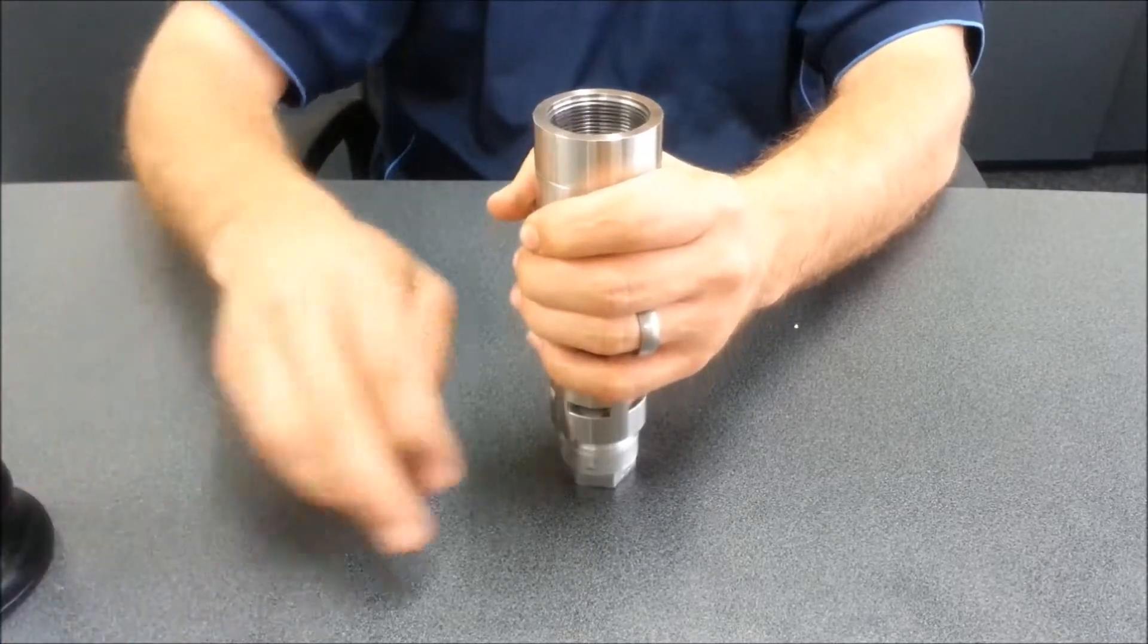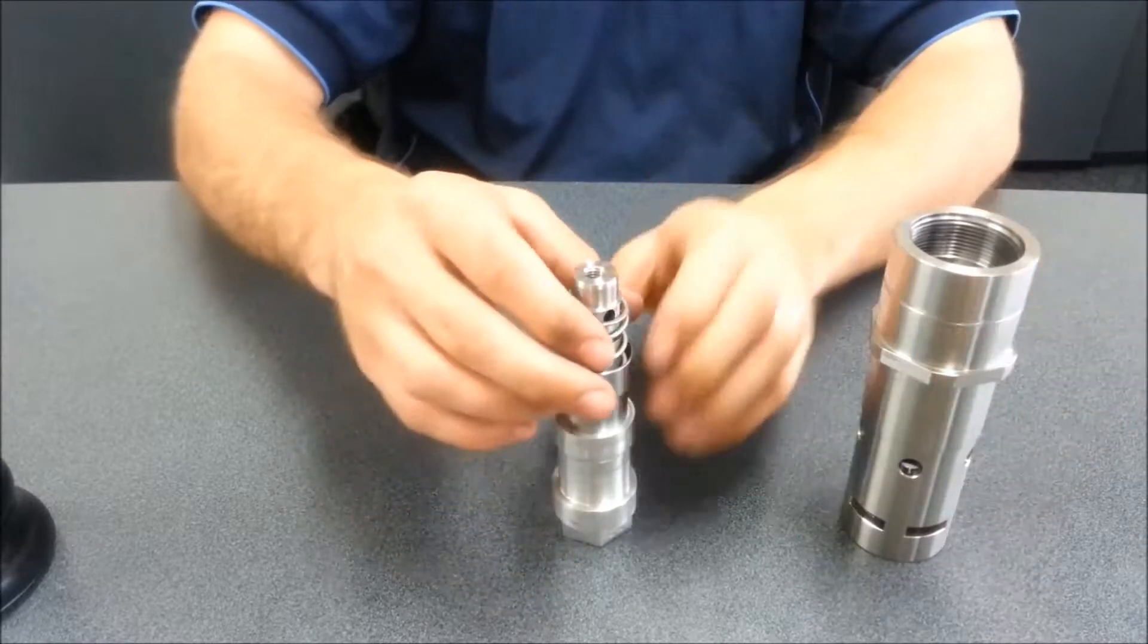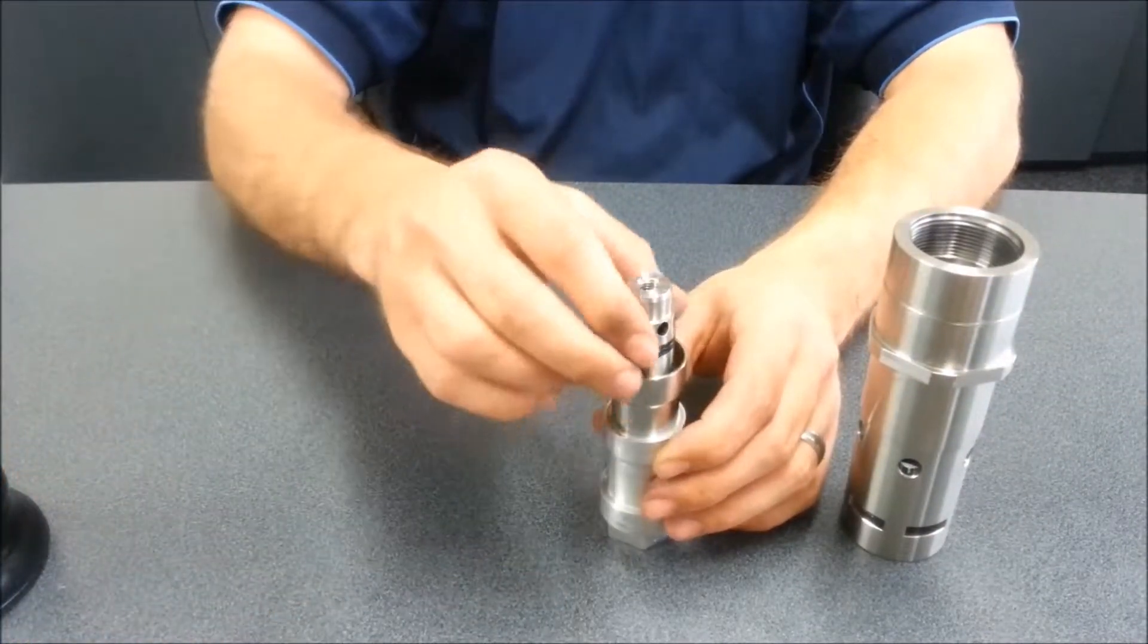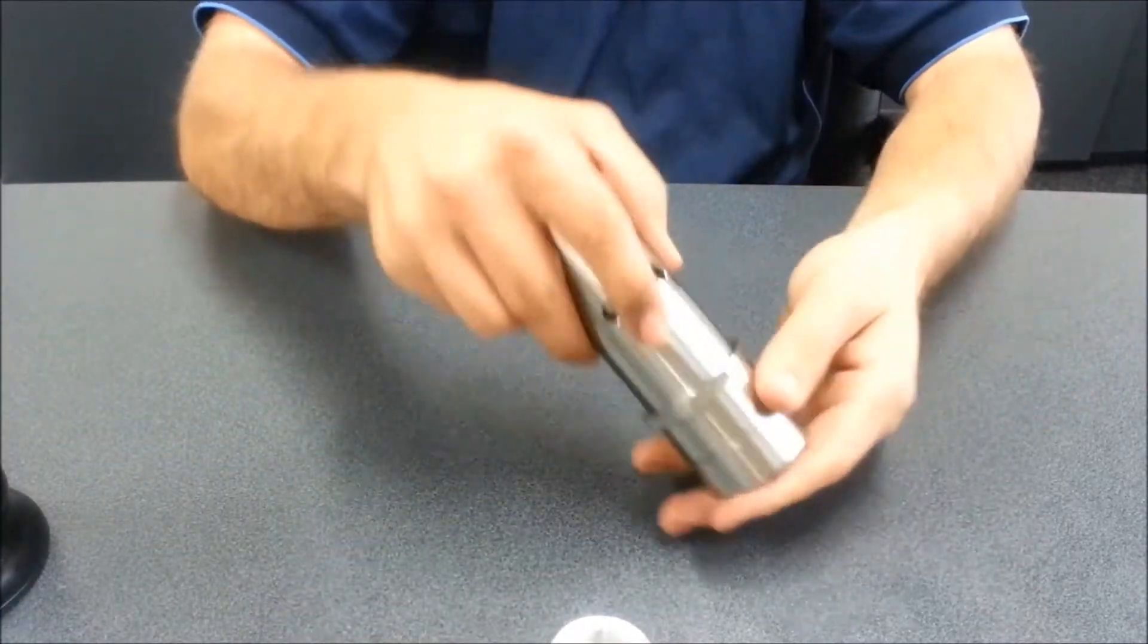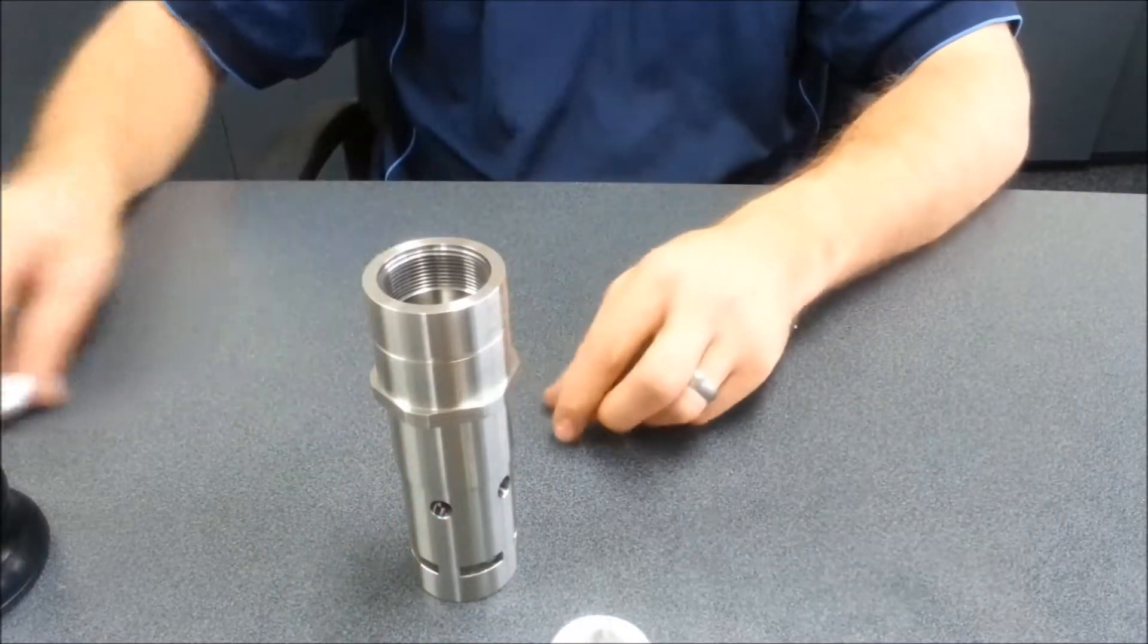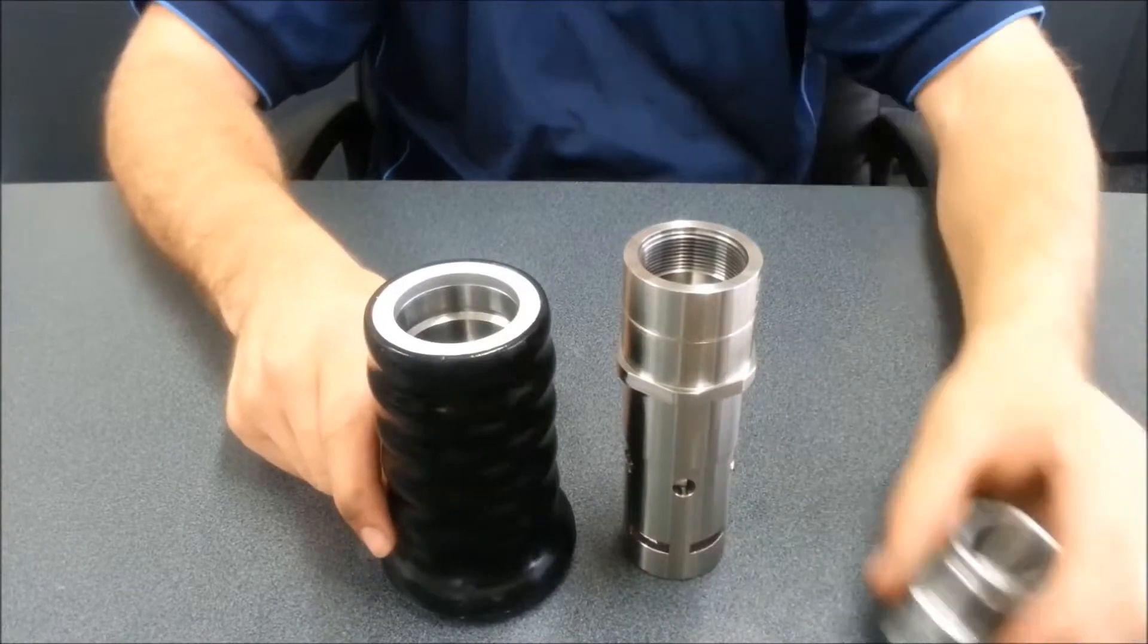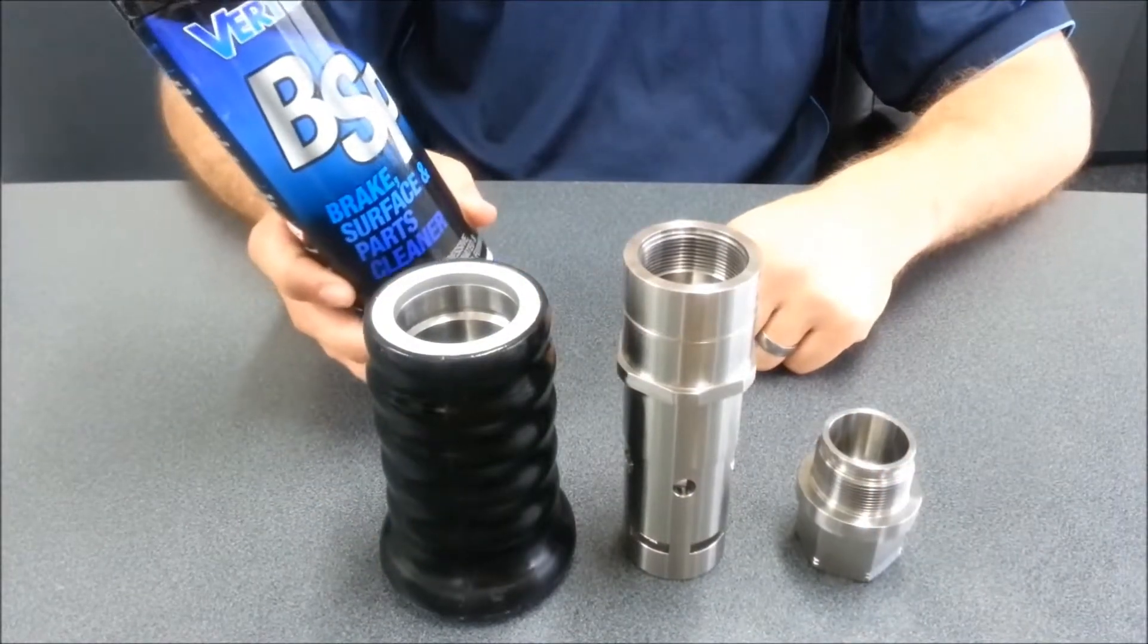Lift up the main body and remove the internal poppet. Remove the spring from the poppet and put to one side. Remove the main poppet seal and also put to one side. Clean all of the components with brake clean or soapy water.